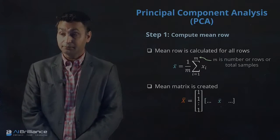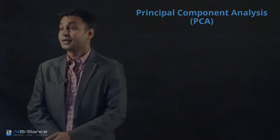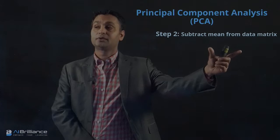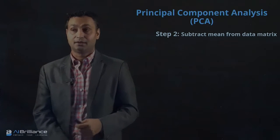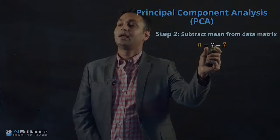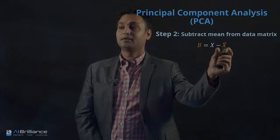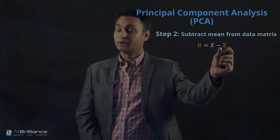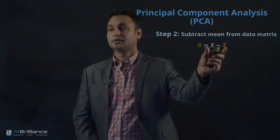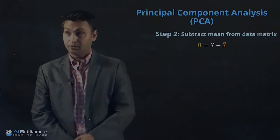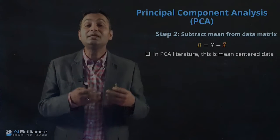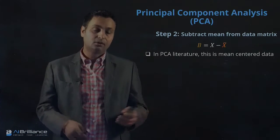Once we have computed the mean matrix, we move to the second step: mean subtraction. We subtract the mean matrix X-bar from the original data matrix X. The subtraction of these two matrices results in a new matrix called B. This is essentially what is known as mean centering of the data in PCA.